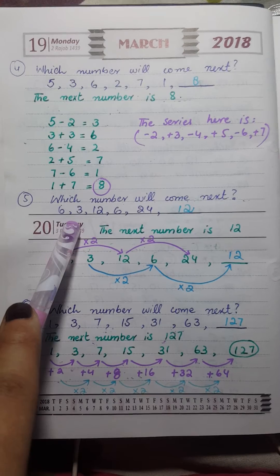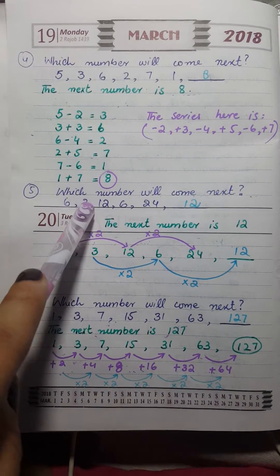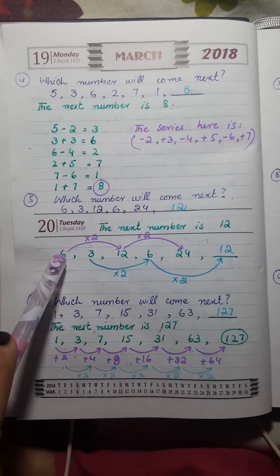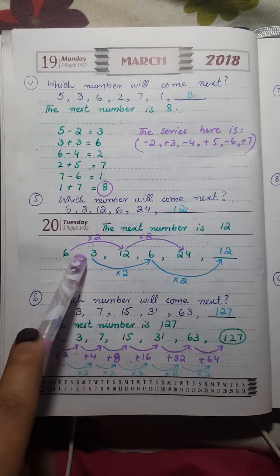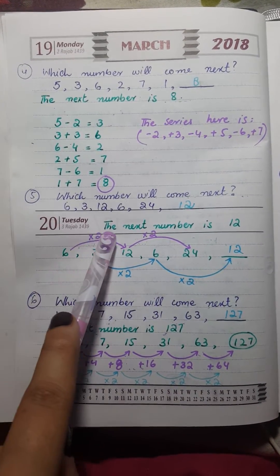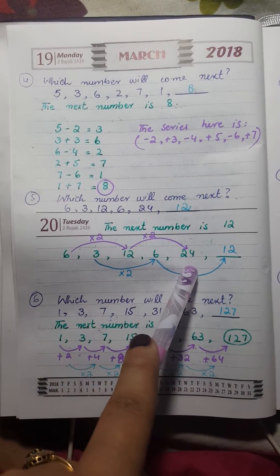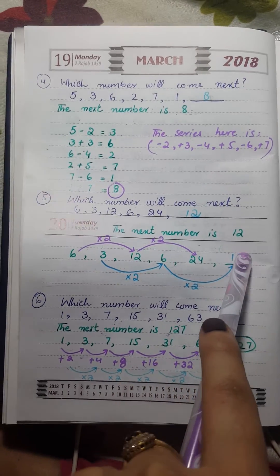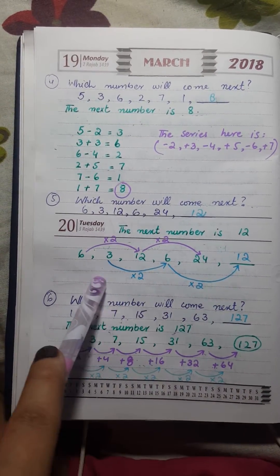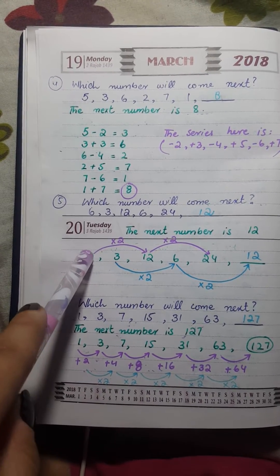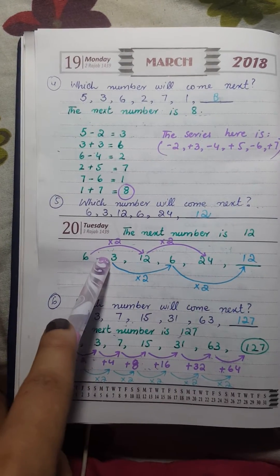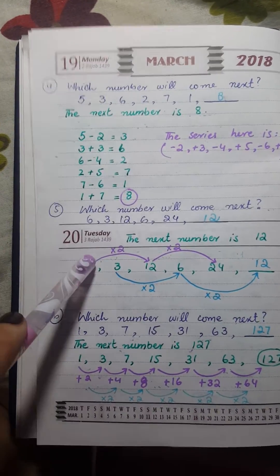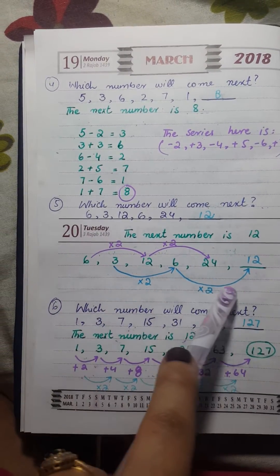Now the next question: which number will come next in 6, 3, 12, 6, 24? The next number will be 12. We see: 6 × 2 = 12, 12 × 2 = 24, and separately 3 × 2 = 6, 6 × 2 = 12. All of them are multiples of 2. The series has two interleaved sequences: 6, 12, 24 and 3, 6, 12 — both multiplying by 2 each step. So the answer is 12.